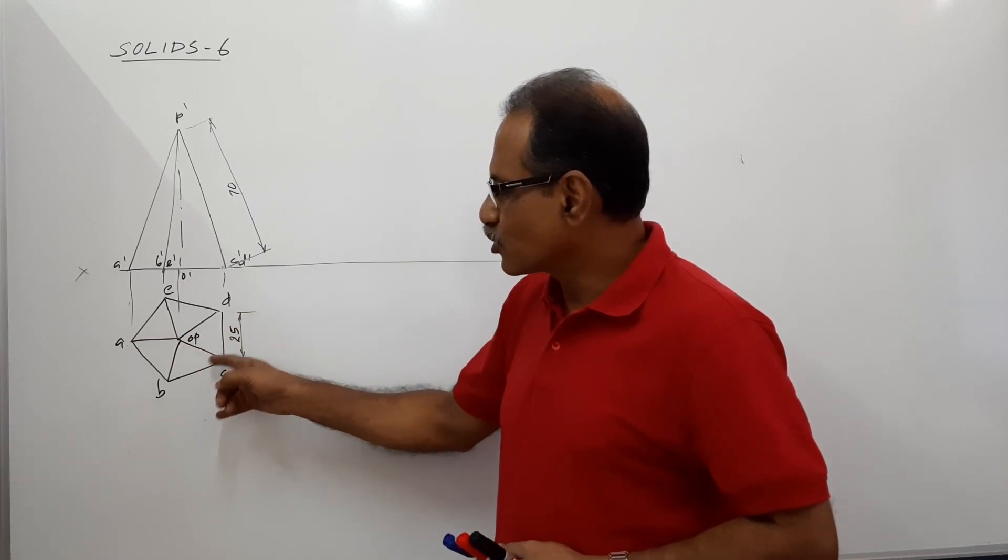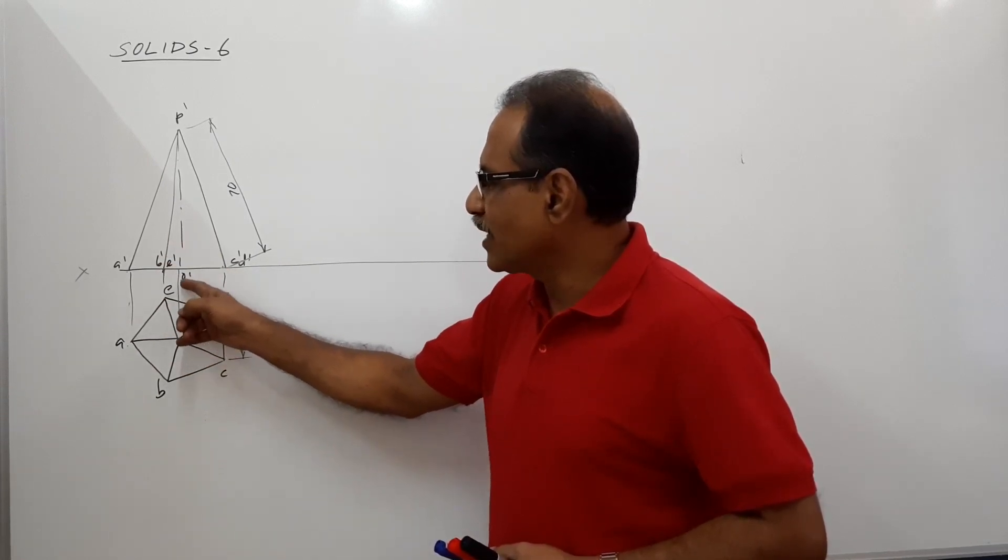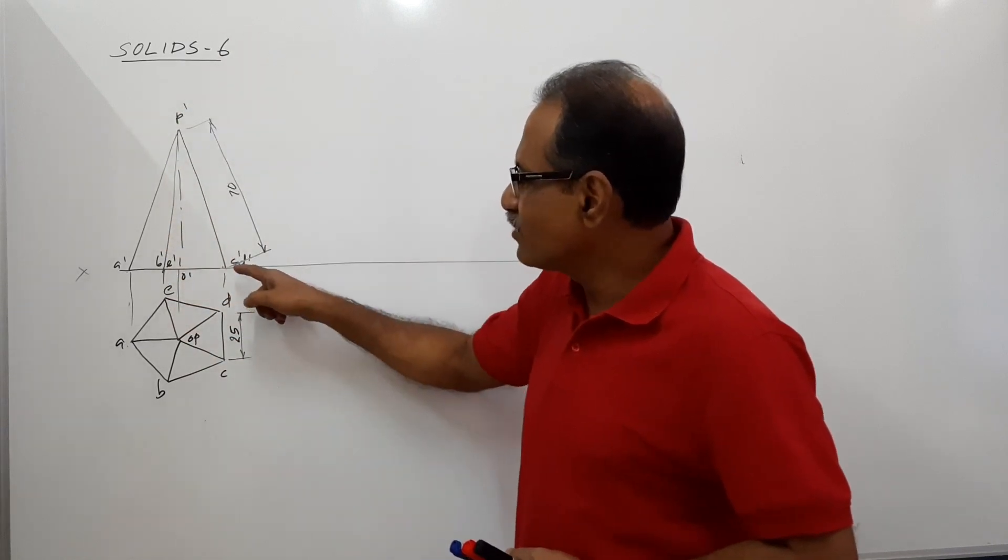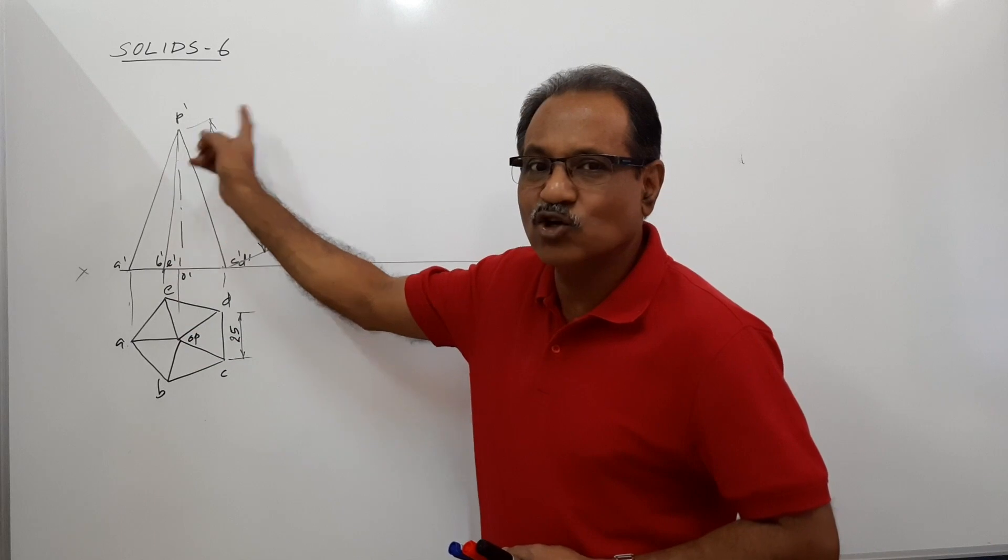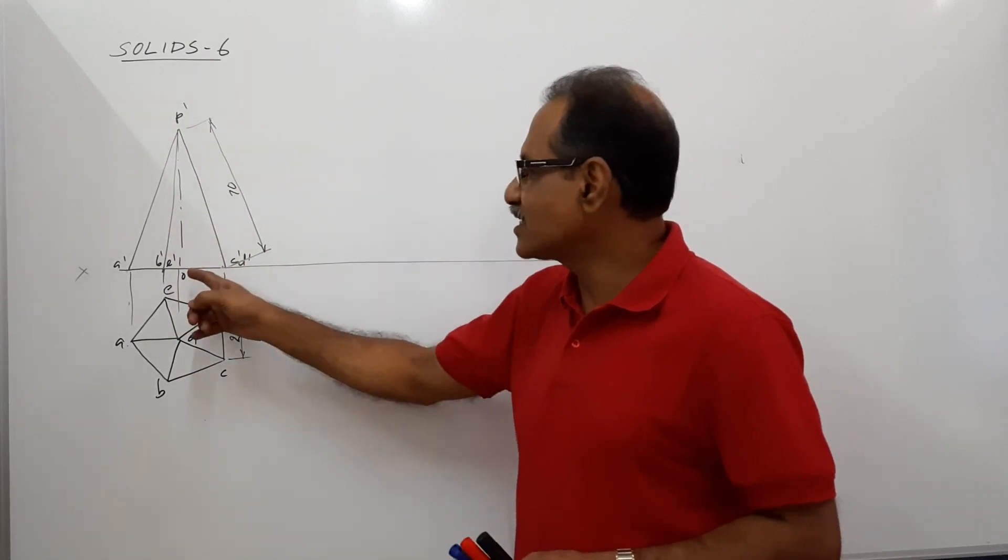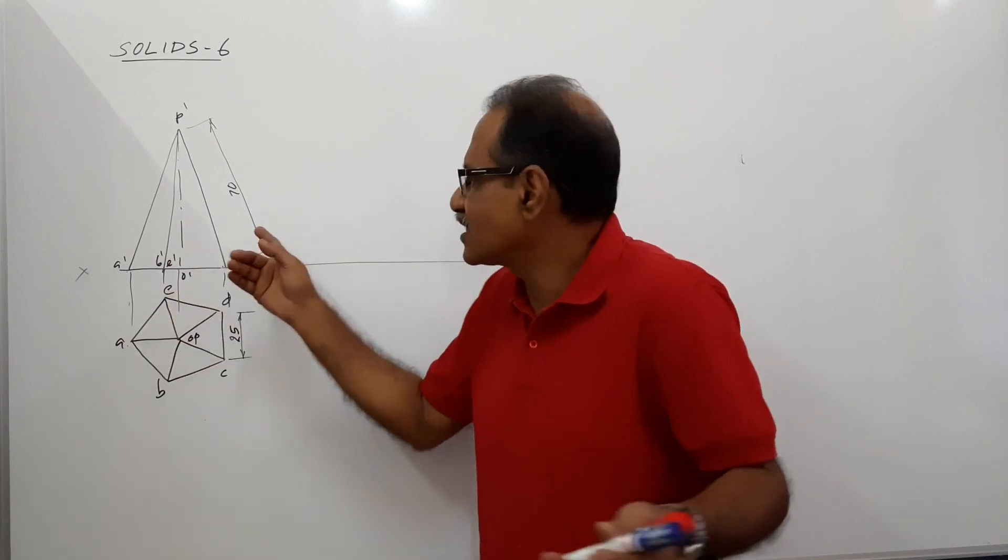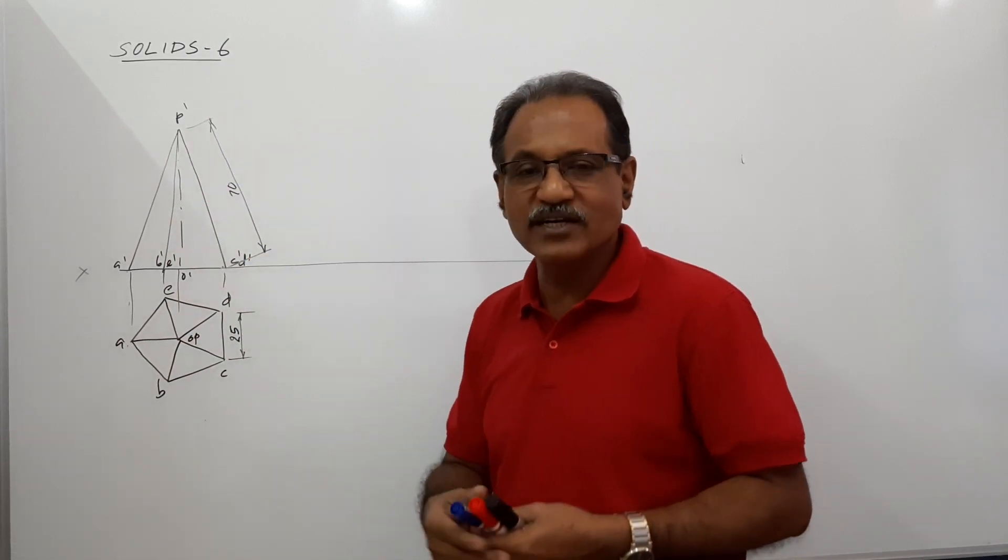So, I draw the plan first. Project all the plan points to XY line. Draw a projector through OP, the axis. And with C dash D dash as center and the slant height as radius, cut an arc on the axis line to get P dash. The axis line is something else. It is less than 70, we don't know how much it is. But this is 70, so cut there. So you have drawn the elevation.